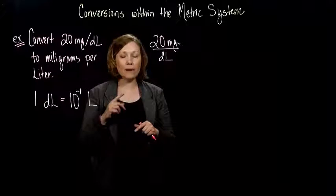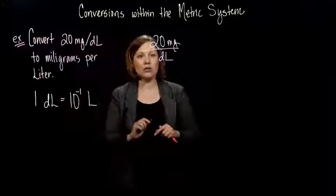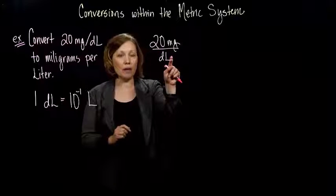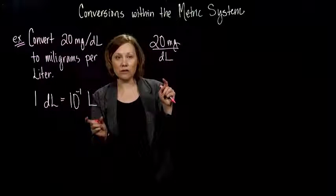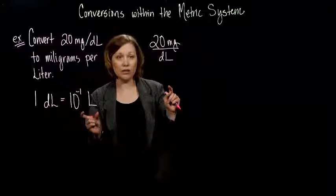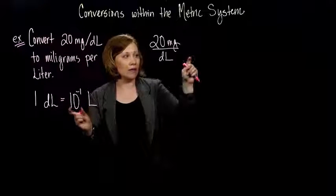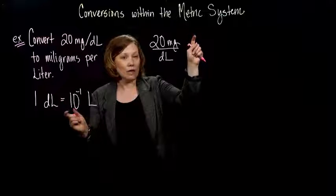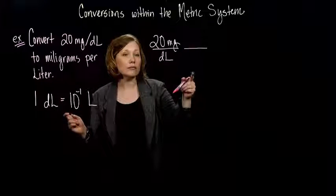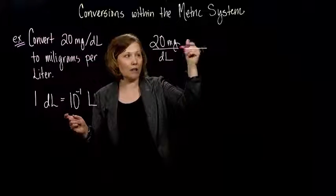So, I want my deciliters to cancel out. So, if my deciliters are on the bottom, in my conversion factor that I'm going to use, to multiply by, where do I want my deciliters to be? Do I want them to be on the bottom or the top if I'm going to cancel? Right, I want them to be up here on the top.